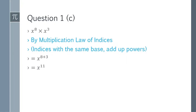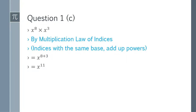Question 1c: x^8 multiplied by x^3. By the law of multiplication, we add up the powers. x is the common base, so we add powers 8 and 3 to get x^(8+3) = x^11. That is the answer for question 1c.